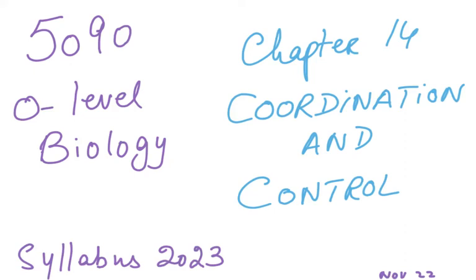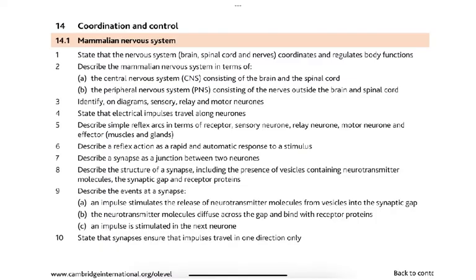Bismillahirrahmanirrahim. We are going to discuss the 5090 O-Level Biology syllabus 2023, which has slight changes in this chapter. This is chapter 14: Coordination and Control. Looking at syllabus point 14.1, the mammalian nervous system — the brain, spinal cord, and nerves — coordinates and regulates body functions.